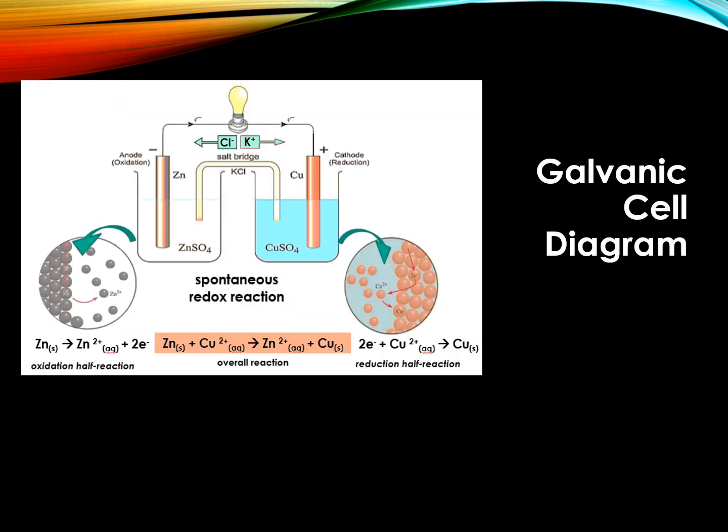The conventional notation for representing galvanic cells is the cell diagram. For example, in the galvanic cell, we assume that the concentrations of zinc ions Zn2+ and copper ions Cu2+ are one molarity.